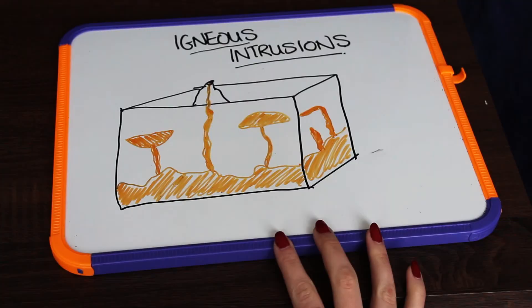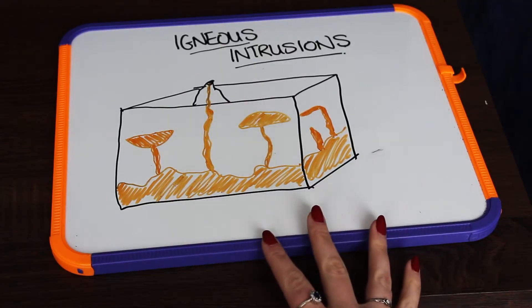Igneous landforms that form within the earth's crust are called igneous intrusions. Magma is less dense than rock and so this magma moves up through cracks and joints and fractures in our earth's crust, and this is how we get igneous intrusions occurring.